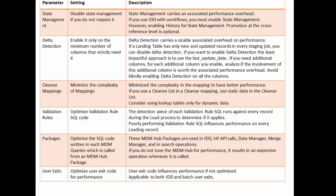For Delta detection, enable it only on the minimum number of columns. In one project, the business asked us to enable Delta detection on all columns since they were unsure which columns would change. We told them that for low-volume data sets it's acceptable, but for high volumes, enabling Delta detection on all columns will cause a performance hit on jobs. In most scenarios, the last-updated column is the most appropriate column to use for Delta detection. Do not blindly select all columns for Delta detection.